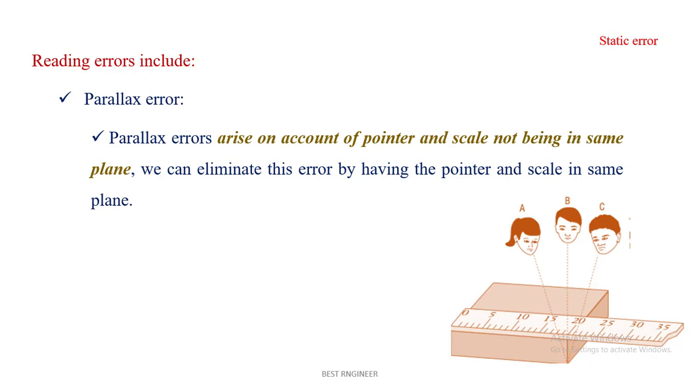The other two persons are seeing the scale from some angle of inclination, so they cannot take the accurate value. See this: the person B can take the accurate value along the line. The person C can take the value of 20 point something; the person A can take the value of 17 point something. So this is called parallax error.